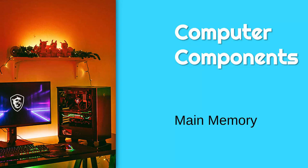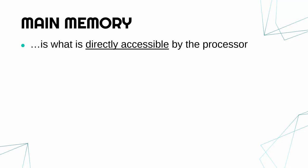Hello, I'm going to talk about main memory, in particular looking at RAM, ROM and cache. Main memory is what is directly accessible by the processor — what the processor is able to access straight away. Main memory has a direct connection to the processor. Something like storage, like a hard drive, a USB memory stick, or a CD, is not directly connected to the CPU.